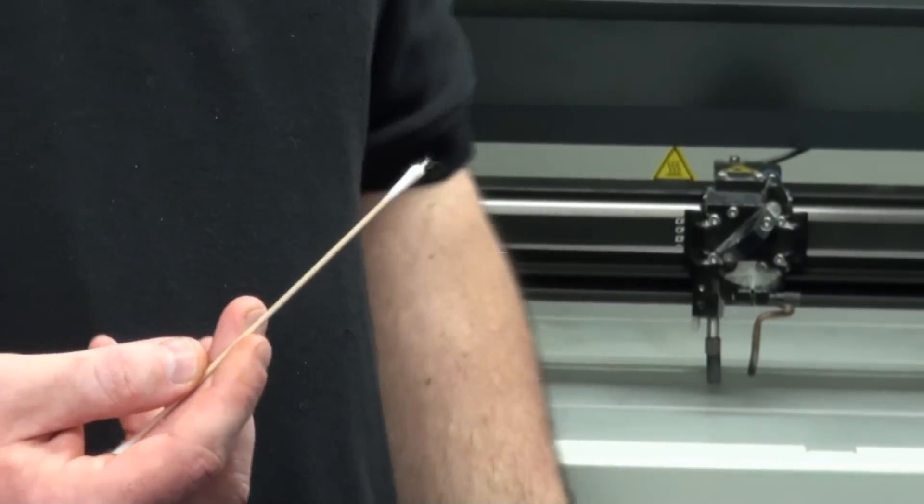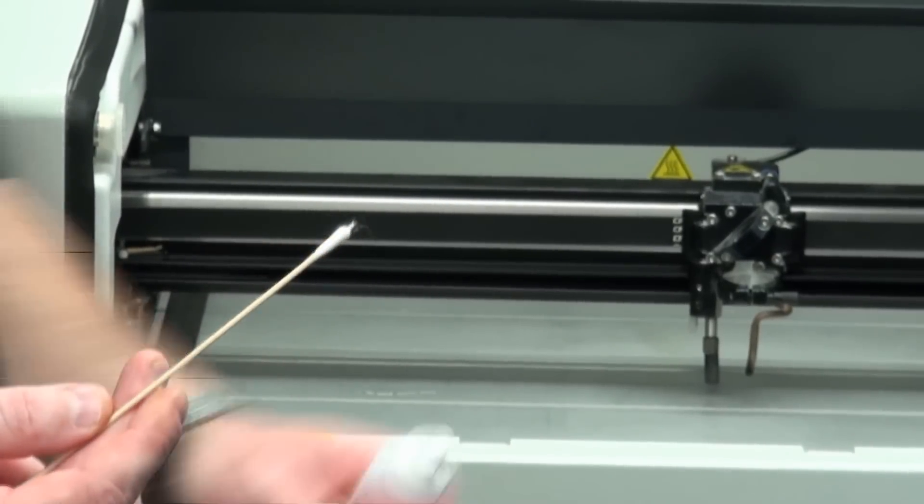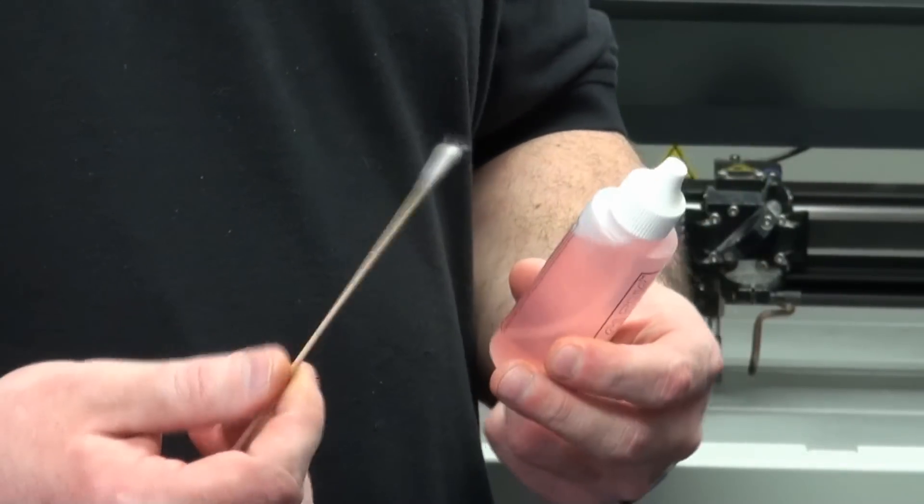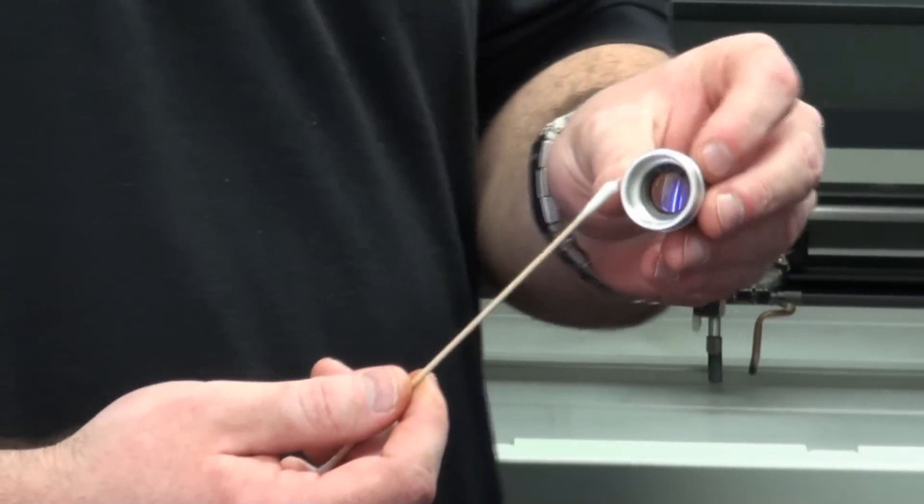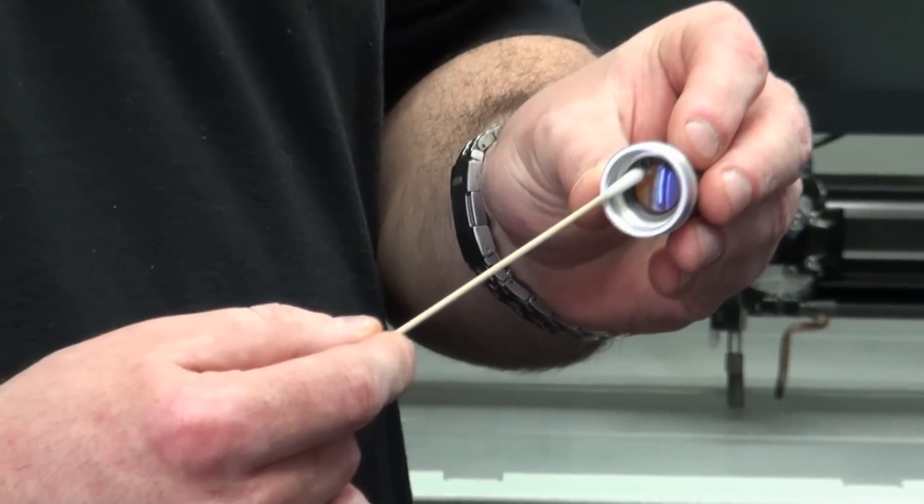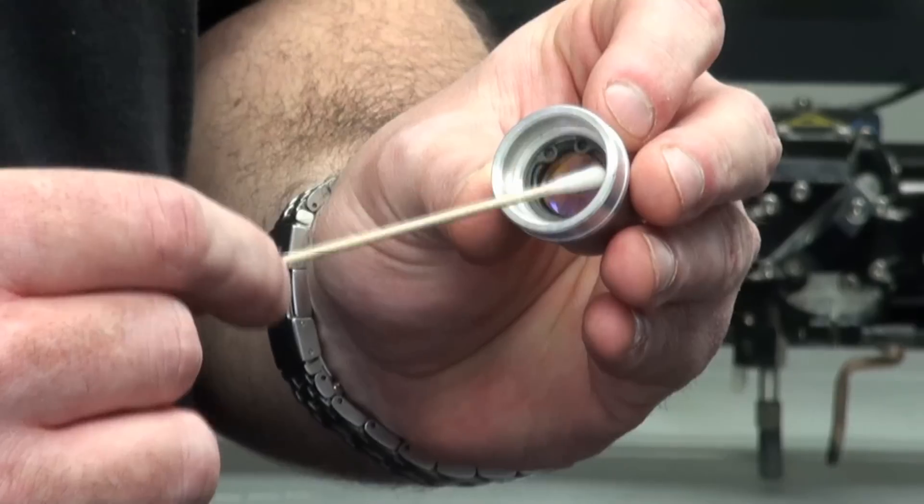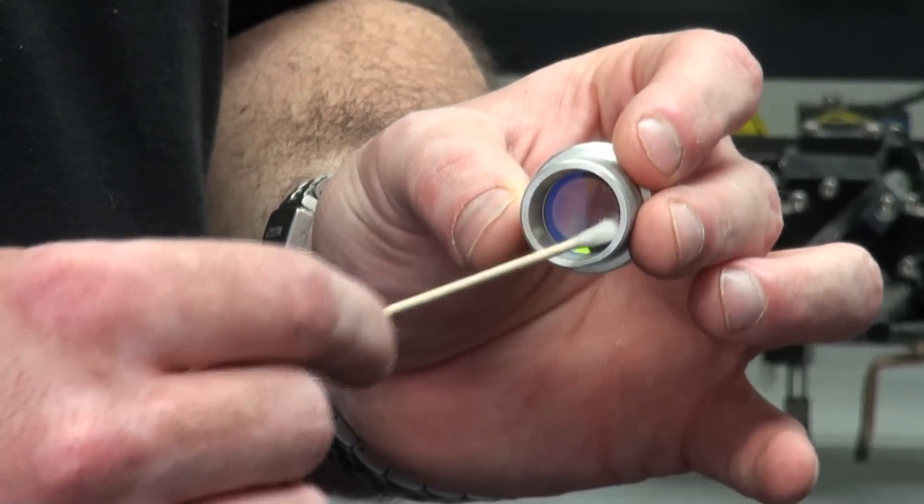So what you'll do is you'll take your nice little Q-tip here. You would go ahead and put your cleaning solution on here, soak the swab. Then just rub it in here real light, just around. Clean and make sure all the lens is clean. Flip it around. Go ahead and do the same thing for the inside.